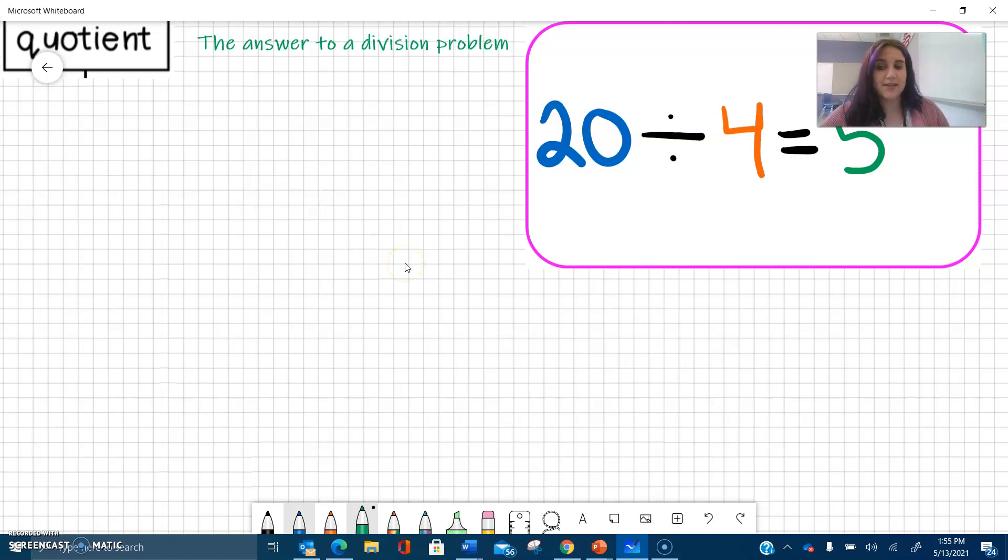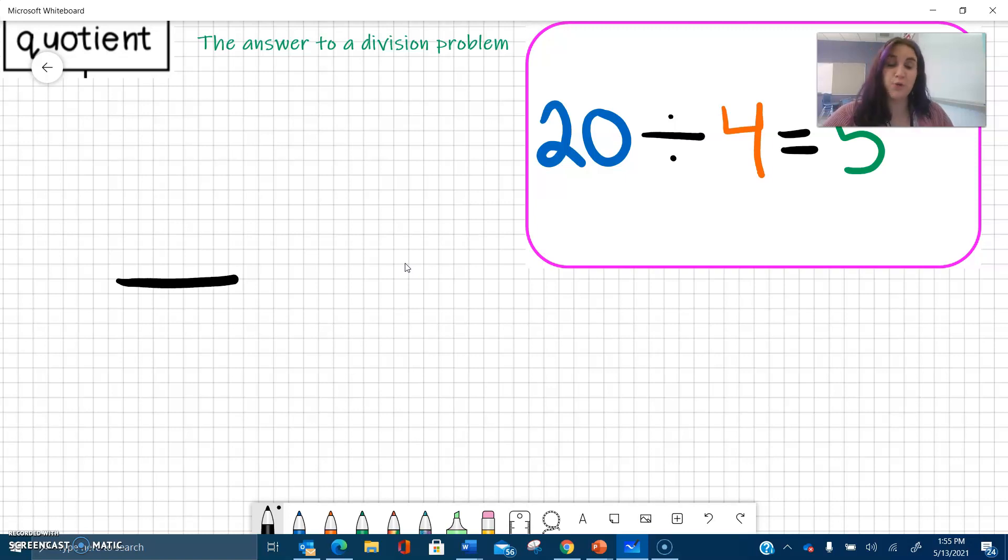So another way that division can be written is with a fraction bar. So here's a fraction bar. And we've seen fractions before, like one half or a half, one third, two thirds, all kinds of fractions. We can say that this fraction bar is also division.